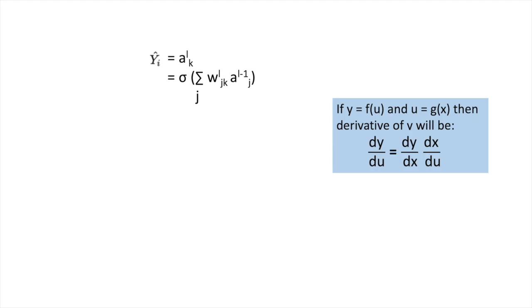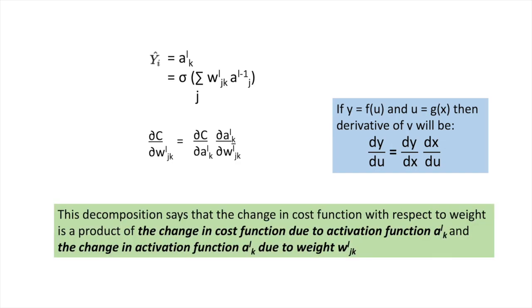If we apply this chain rule to the derivative of cost function, it will be like dC/da_k^l times da_k^l/dw_jk^l. This means we are representing this as product of the change in cost function due to activation function a_k^l and the change in activation function a_k^l due to the weight w_jk^l.